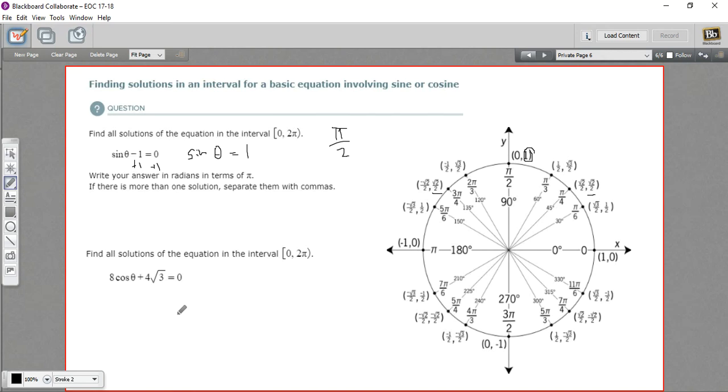Let's look at another one. This says find all the solutions to the equation in that same interval, one time around the unit circle, where 8 times the cosine of theta plus 4 times the √3 equals 0. And at first glance, this looks pretty tricky.